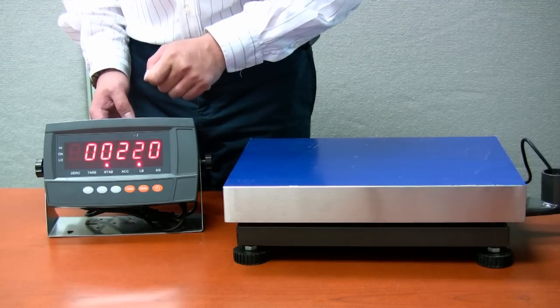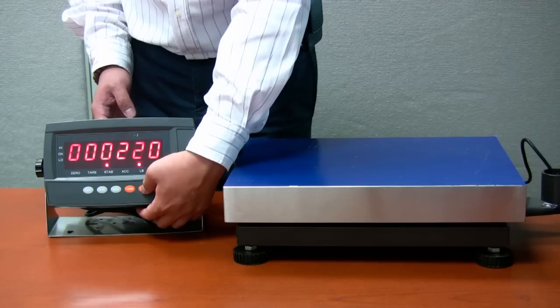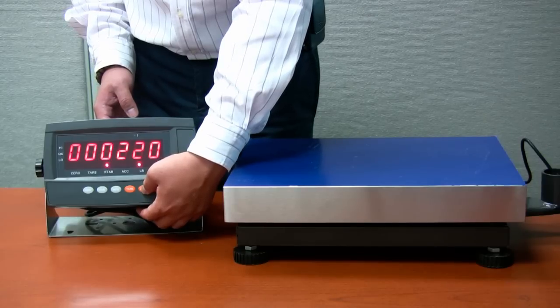Press function key to move the blinking digit and the zero key to change the value of the blinking digit to enter the weight of your calibration weight.